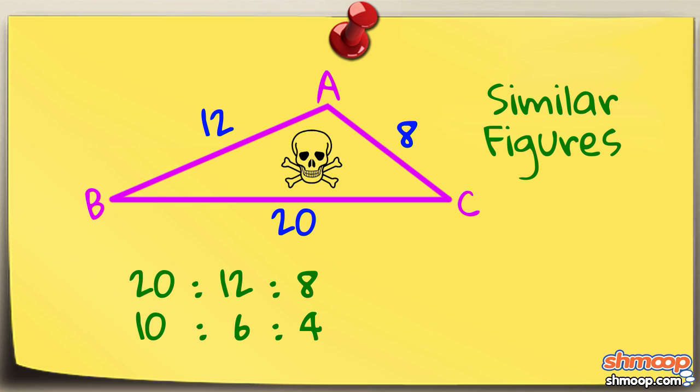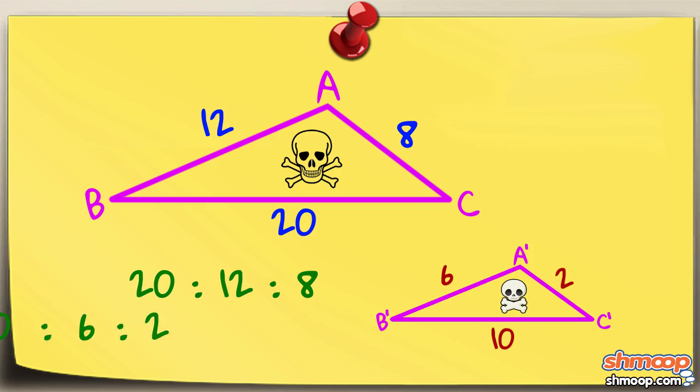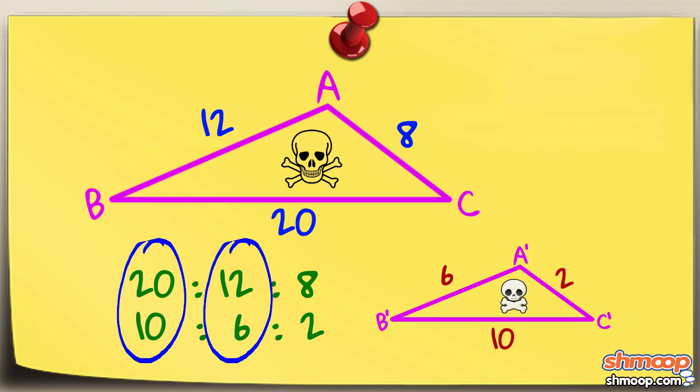If Little Bermuda is 10 by 6 by 2, then our hopes are sunk. Because while two of the three sides are half the length of the original, the final side is only a quarter of the distance of its big cousin.